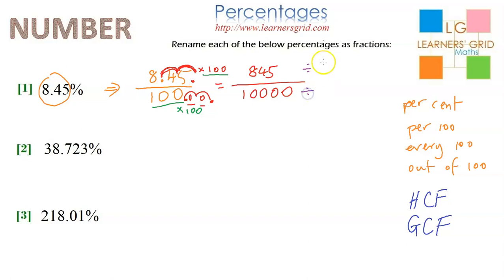So I have to divide the numerator and denominator by 5. 845 divided by 5 is 169, and 10,000 divided by 5 is 2,000. This becomes our final answer. Let's have a crack at the second one.